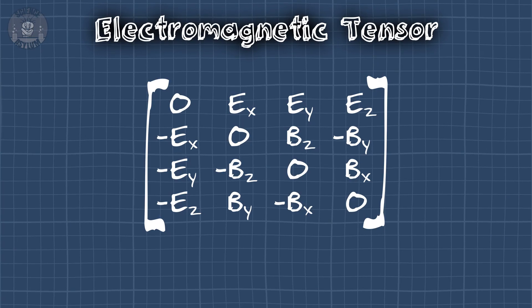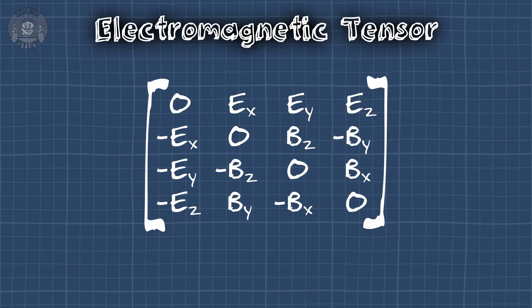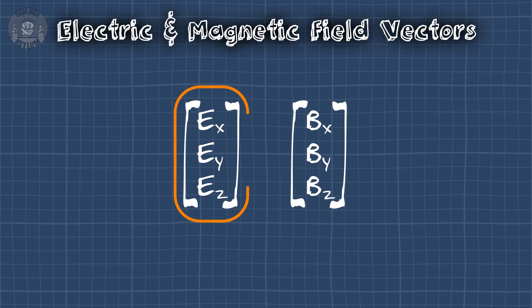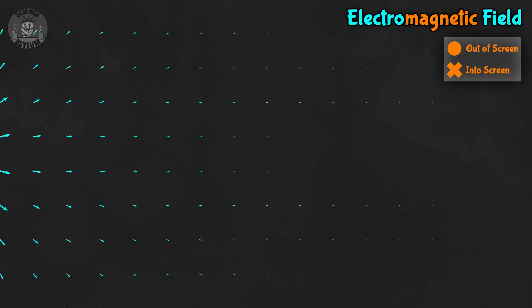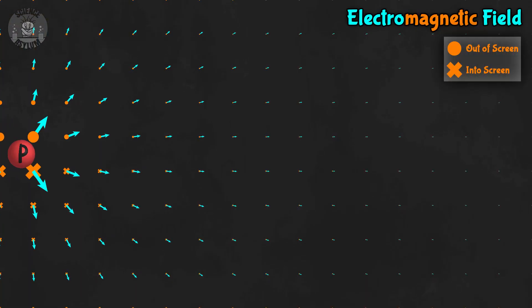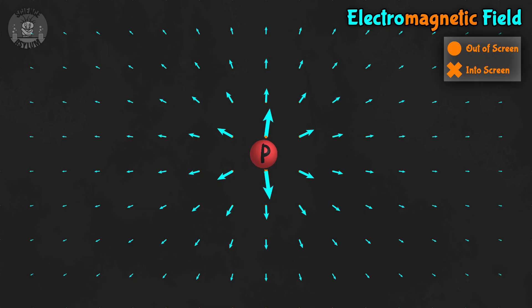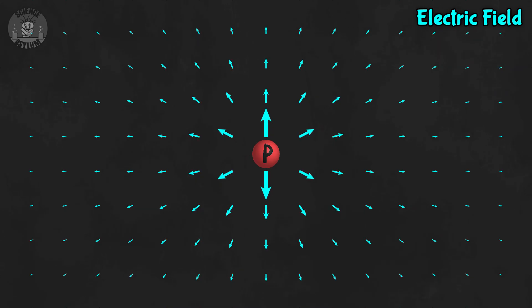And because electricity is so similar, we can do the same thing with the EM field and charge. But the EM field is just a smidge more complicated. We could look at it all together as the electromagnetic tensor — one big set of numbers attached to each point in space — but it's easier to think about it as two separate vectors instead: one for the electric part and one for the magnetic part. Vector fields are so much easier than tensor fields. So we'll imagine each point in space has two vector arrows attached. As the charge moves around inside the space, you can see how each of those vectors changes. If the charge isn't moving, then all the magnetic arrows drop to zero, leaving only the electric arrows. We'll focus on that electric part now and save the magnetic part for a later video.